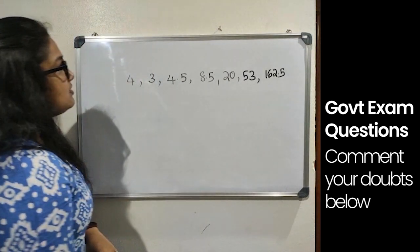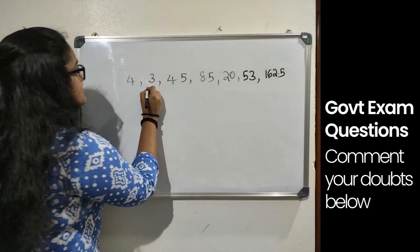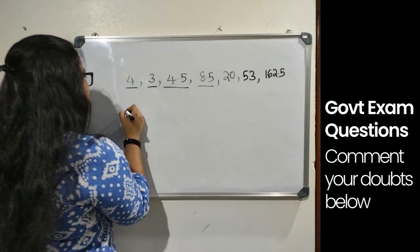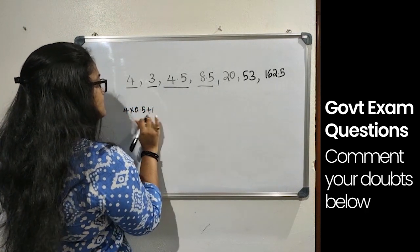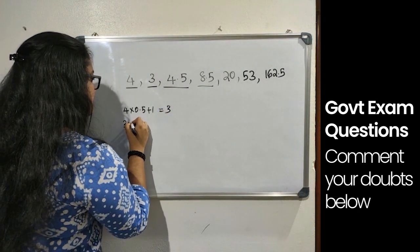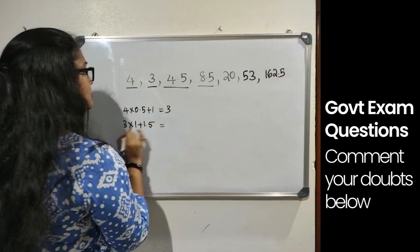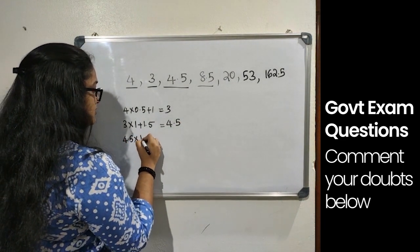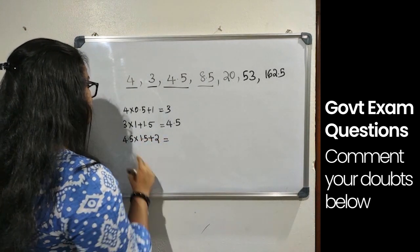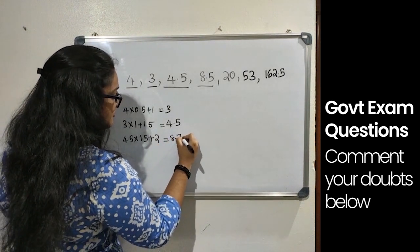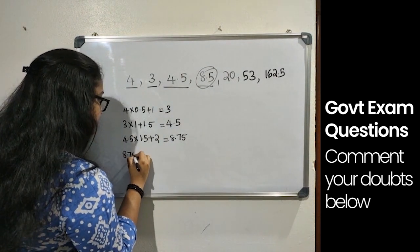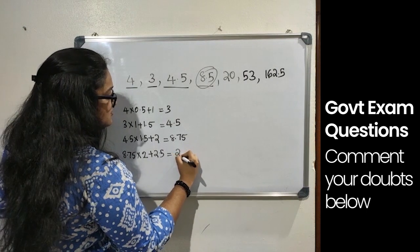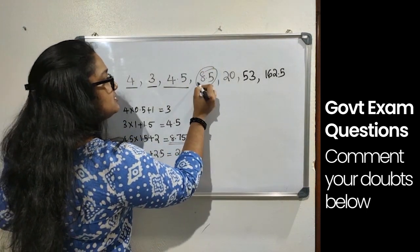The final series involves decimals. The pattern is: 4 × 0.5 + 1 = 3, then 3 × 1 + 1.5 = 4.5, then 4.5 × 1.5 + 2 = 8.75. However, the given number is 8.5, so 8.5 is placed incorrectly. Checking further: 8.5 × 2 + 2.5 = 19.5, but the next term given is 20.